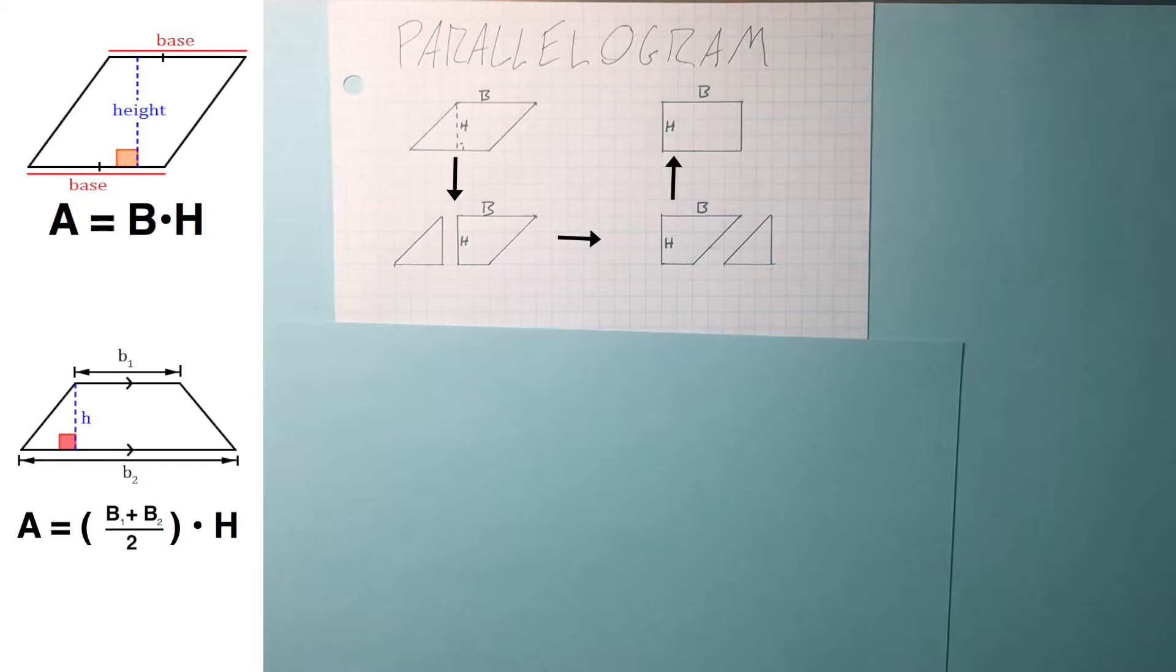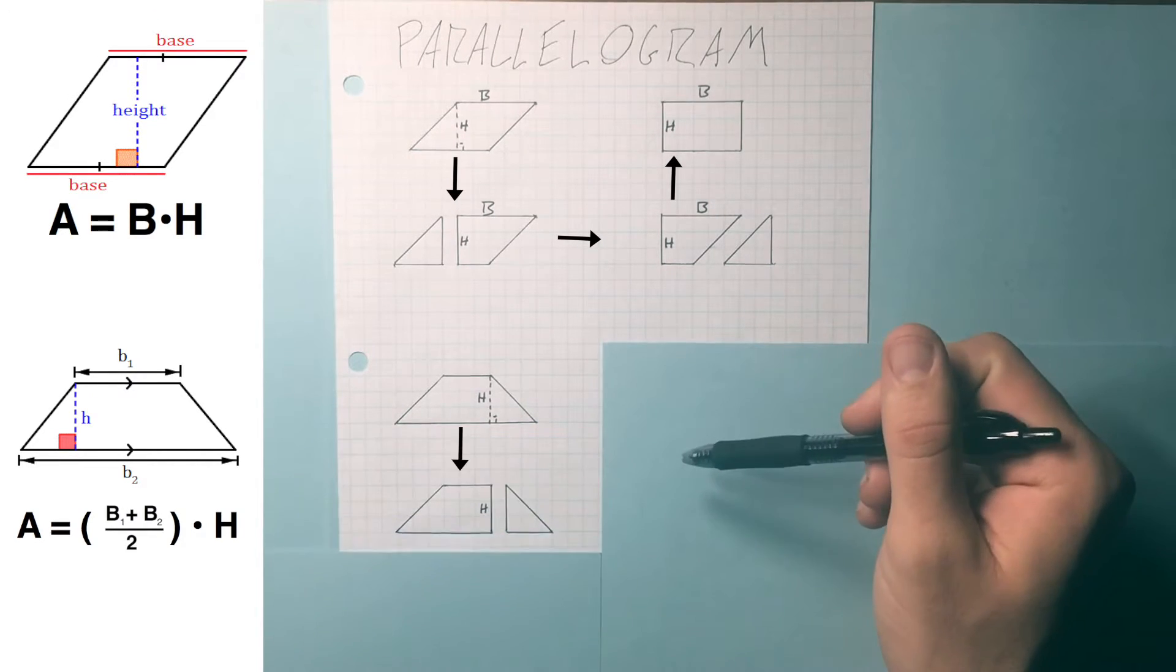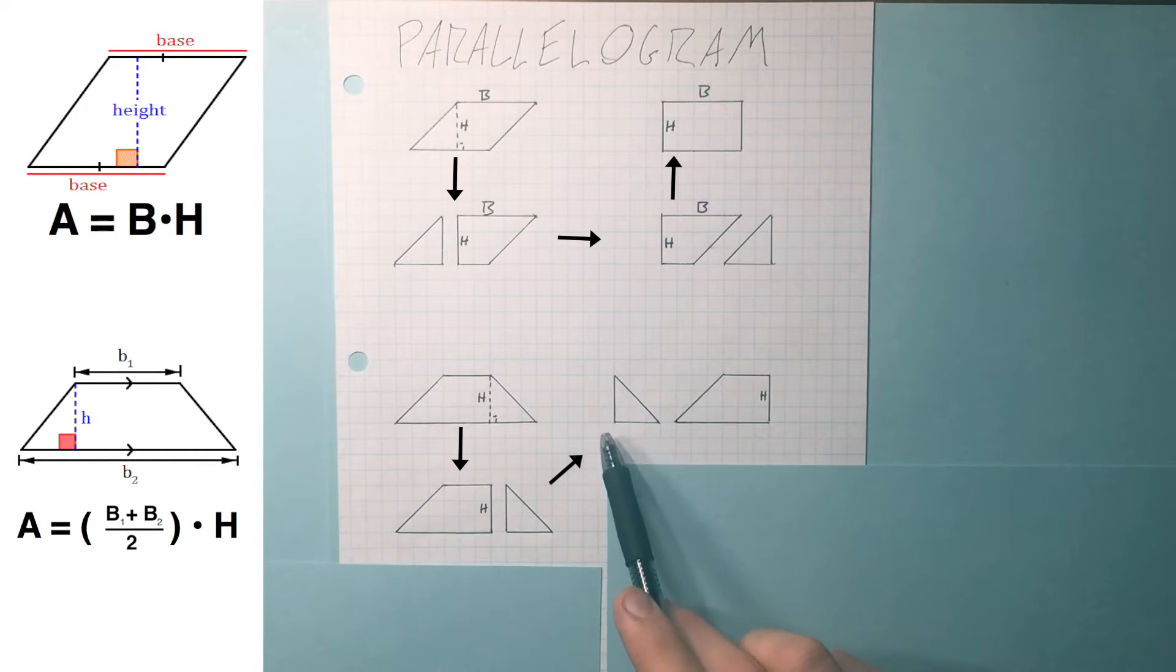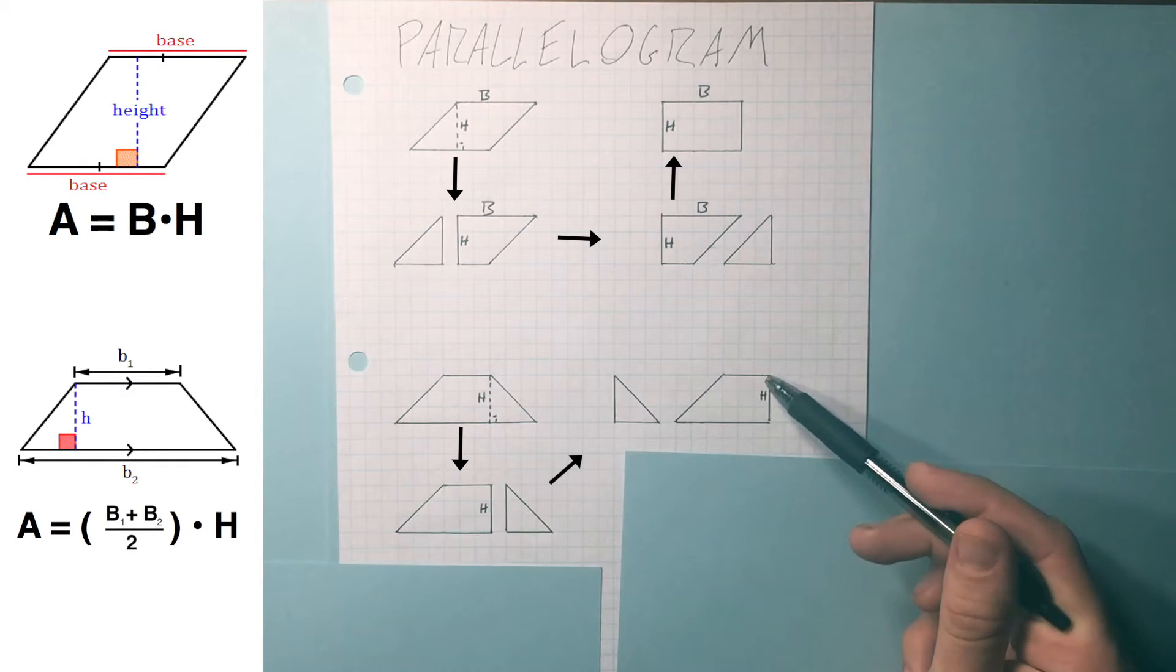So let's look at trapezoids. Trapezoids are a little bit more difficult. We still cut off the height, like we did before, and then we move the triangle over the other side, except it doesn't necessarily fit in place, because this base is much longer than this base.